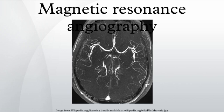Flow-independent non-enhanced MRA methods are not based on flow, but exploit differences in T1, T2 and chemical shift to distinguish blood from static tissue. Gated Subtraction Fast Spin Echo is an imaging technique that subtracts two fast spin echo sequences acquired at systole and diastole. Arteriography is achieved by subtracting the systolic data, where the arteries appear dark, from the diastolic dataset, where the arteries appear bright. This requires the use of electrocardiographic gating. Trade names for this technique include fresh blood imaging, native space, and delta flow.